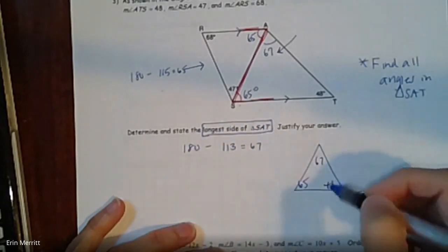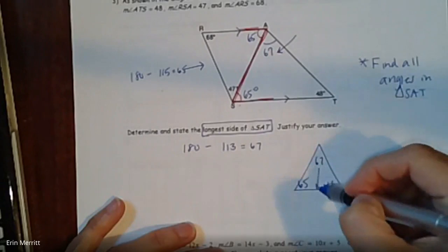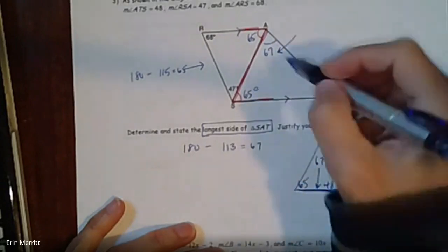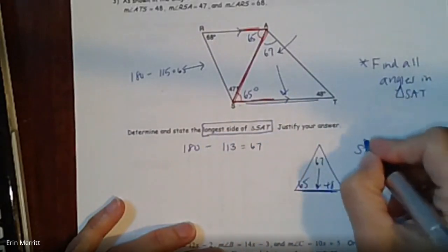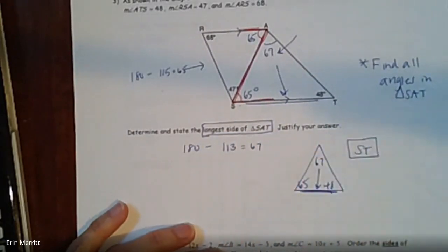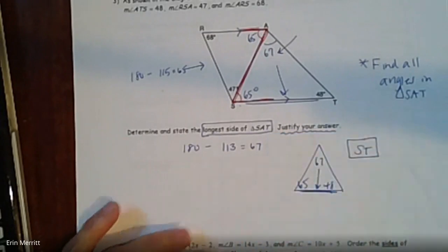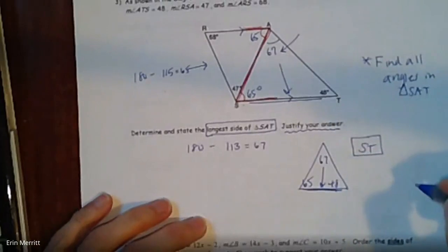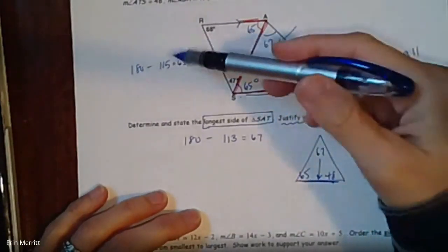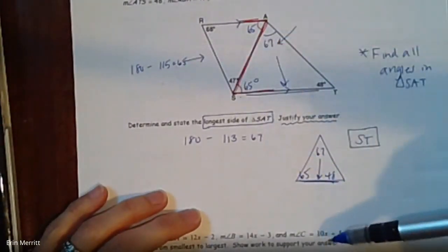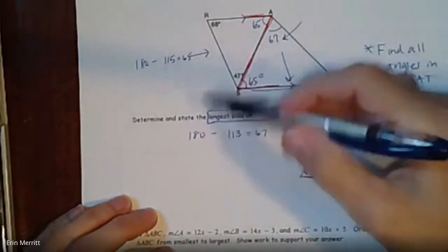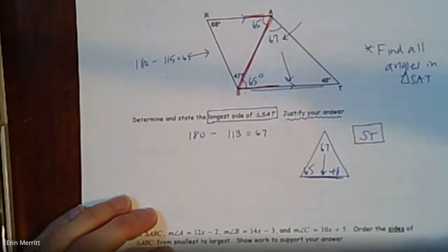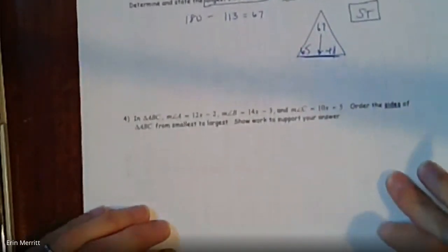With all three angles in triangle SAT — 65, 67, and 48 — the longest side is across from the largest angle of 67 degrees, which is side ST at the bottom. When it says 'justify your answer,' that means showing the algebraic work that supports your answer, not just picking a side.